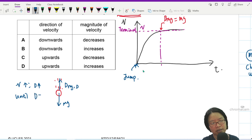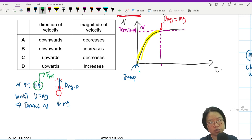Until D equals mg, then this is terminal velocity. This idea is so important. They want you to know that resistance causes non-uniform acceleration. That's why you can see this graph here—the acceleration decreases because drag increasing means net force decreases, means acceleration decreases.